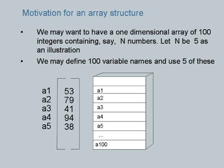Here is the motivation why we require arrays. I have different variables A1, A2, A3, A4, A5 with values 53, 79, 41, 94, 38. Suppose these are 5 variables out of 100 required, declared as A1, A2, A3 up to A100. If I require those many variables I might declare them with individual names, and the compiler allocates memory one after another — since they are integers, each memory location is 4 bytes long. However, these are all individual variables. How nice it would be if we could define all of them as part of an array — a single structure — with a single name A, where A1, A2, A3 are elements of that array.